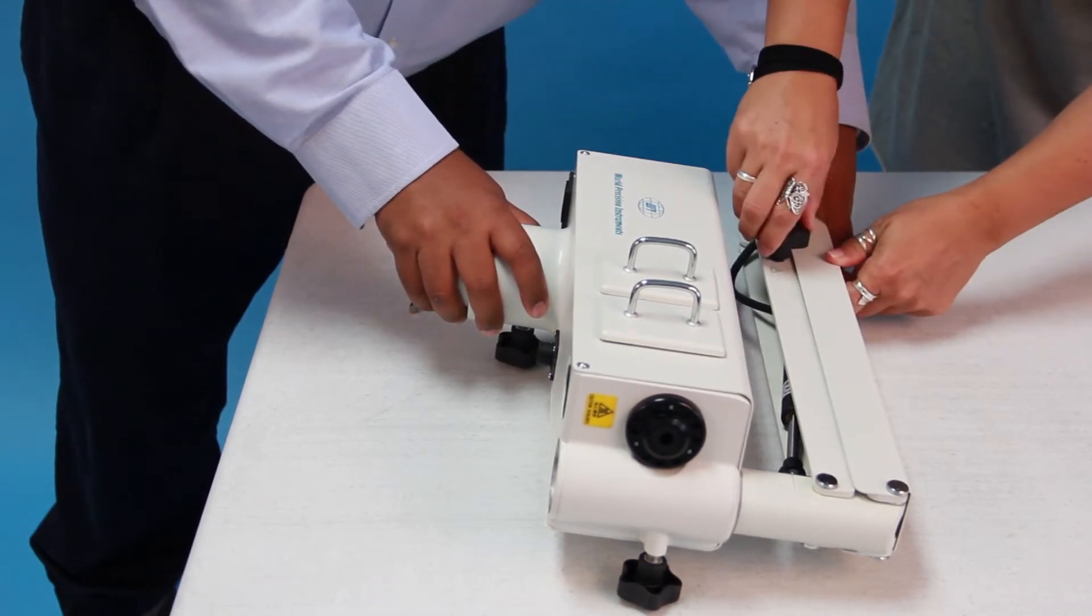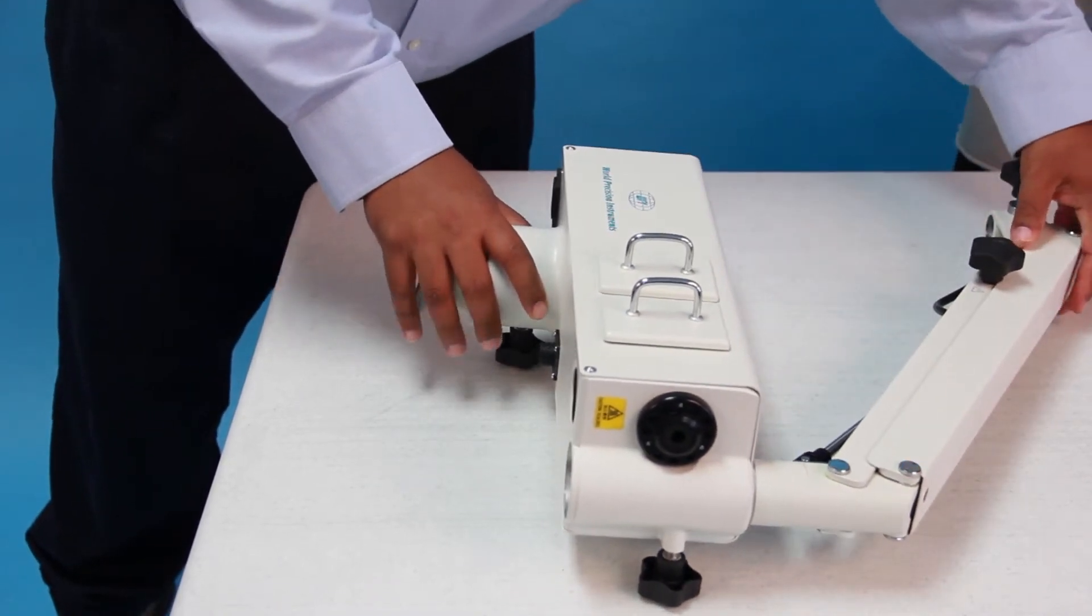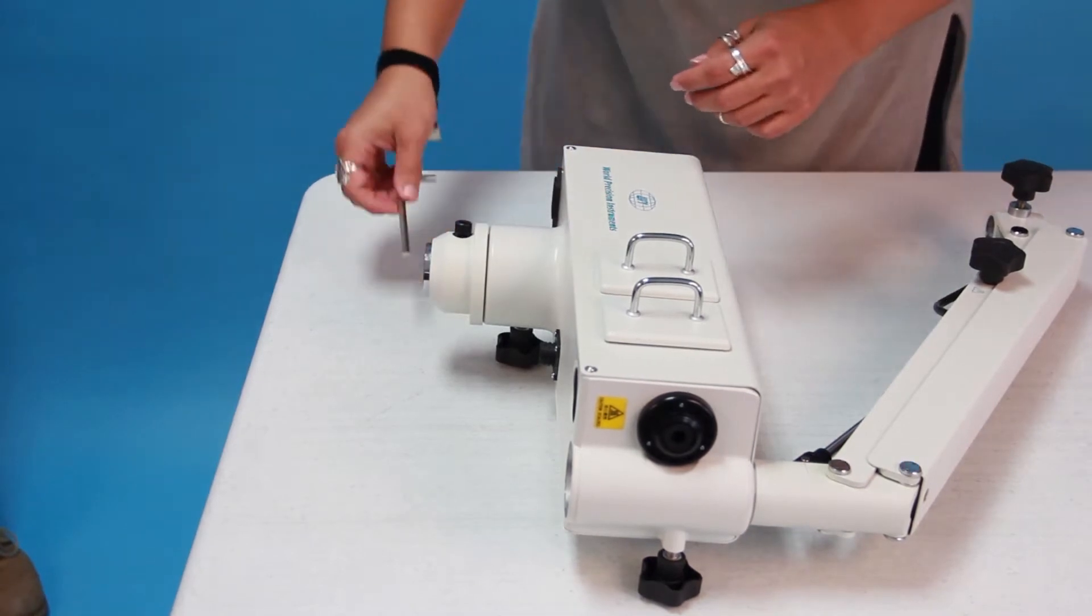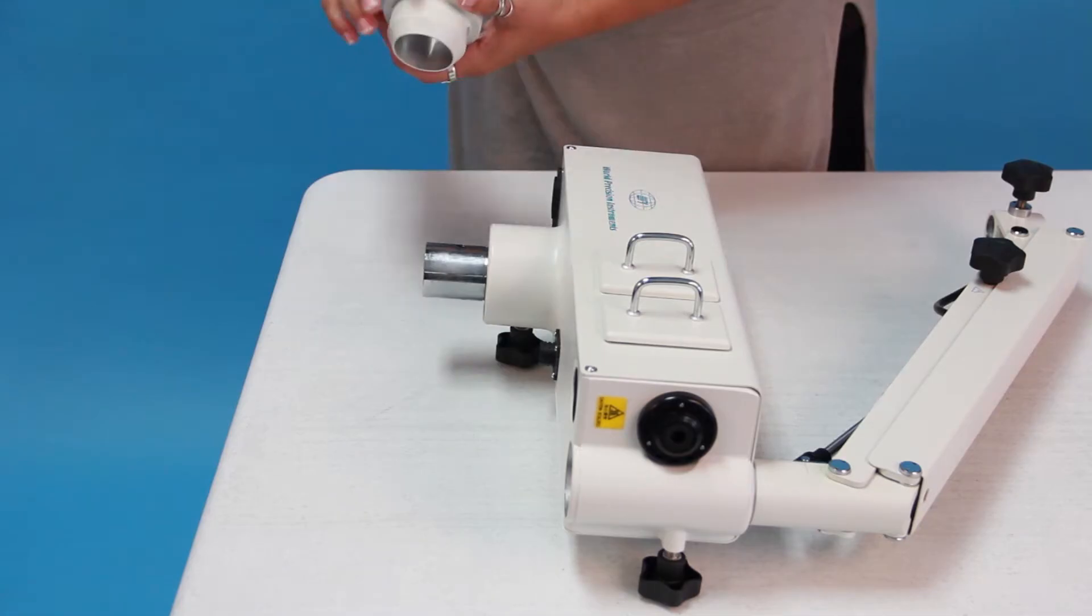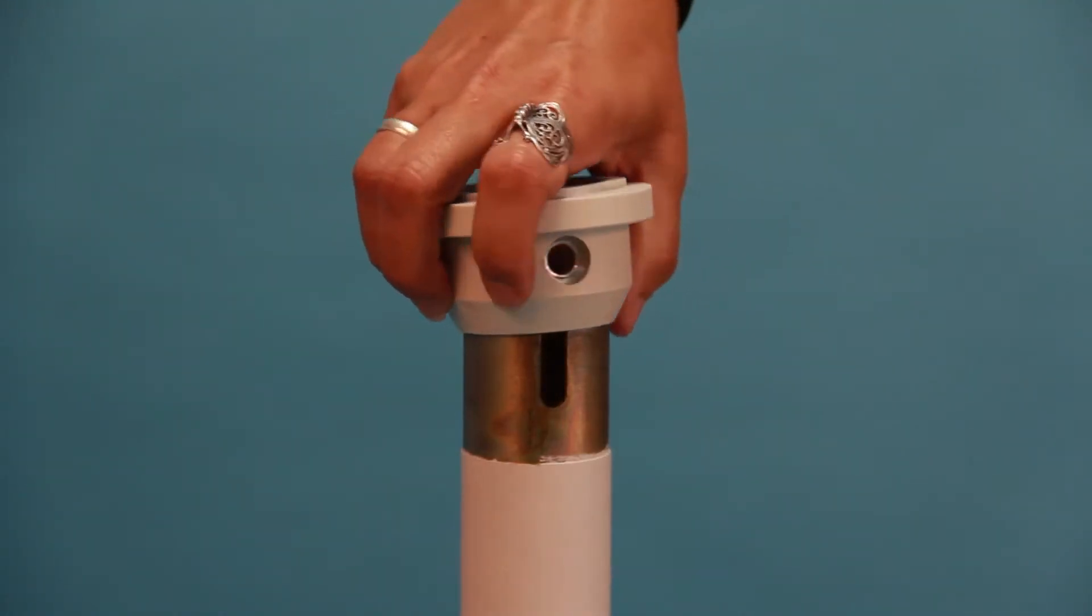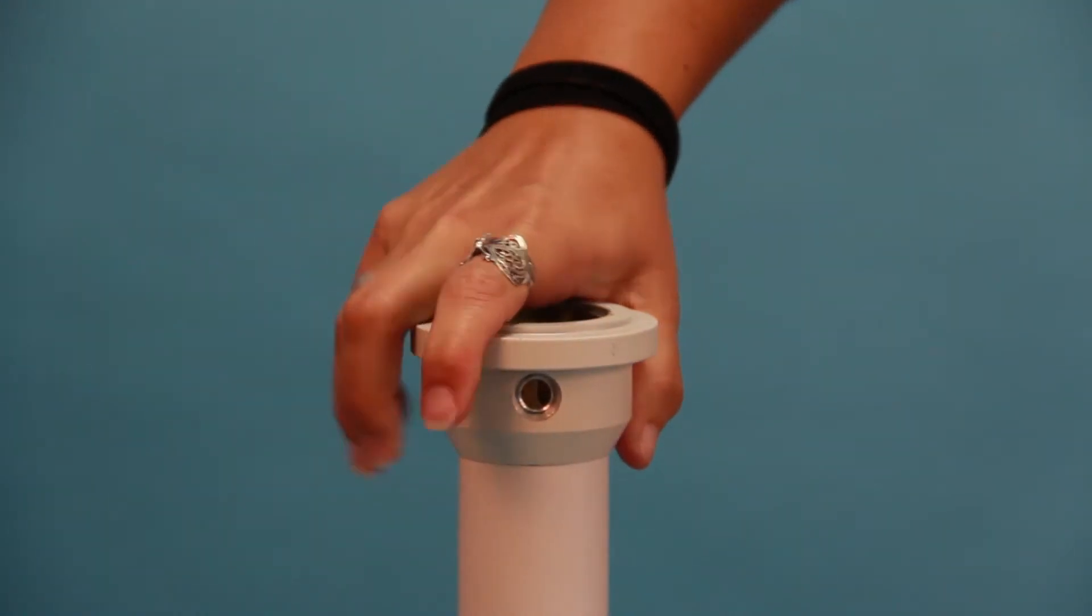Loosen the tension knob and release the tension on the spring-loaded arm. Then remove the post cap from the bottom of the microscope. Next, install the post cap and align the hole in the post cap with the slot in the top of the post.